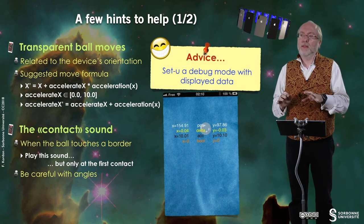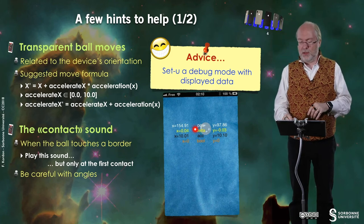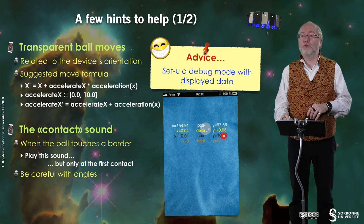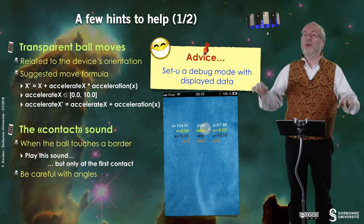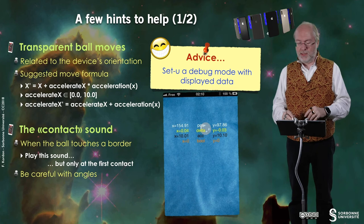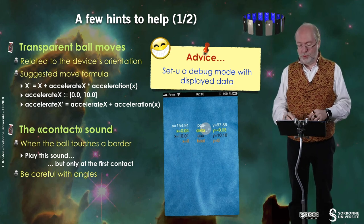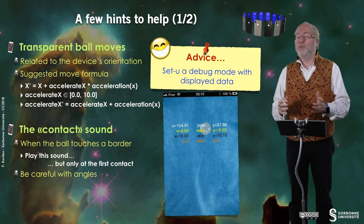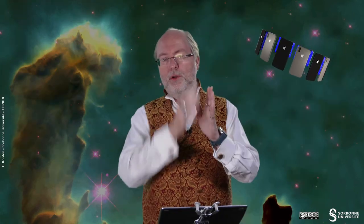A strong advice: set up a debug mode with some displayed data — typically the position of your ball, the data you fetch about the orientation on the x-axis and y-axis, the current acceleration you have measured, and the booleans that state whether you are touching a border on the x-axis and on the y-axis.